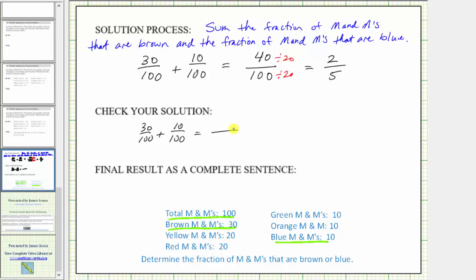Thirty hundredths of the M&Ms are brown and 10 hundredths are blue. And just to check our sum when adding fractions, we add the numerators — 30 plus 10 is equal to 40. The denominator remains the same, and if we divide the numerator and denominator by 20, we simplify the fraction and get two-fifths, which verifies our solution is correct.